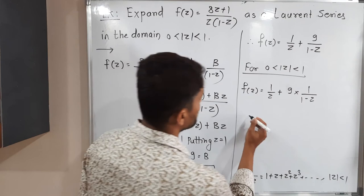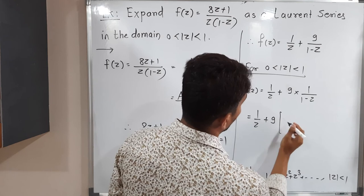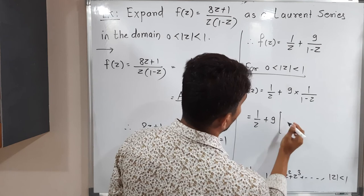So let us write the series expansion. 1 by z plus 9 times, its series is 1 plus z plus z square plus z cube plus and so on. This is the required Laurent expansion of the given function. Example is over. Make a screenshot of it and then we will stop. Thank you.